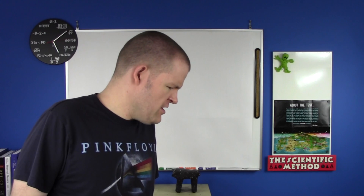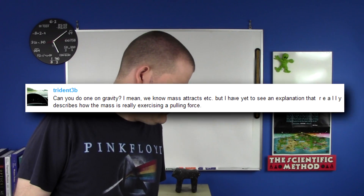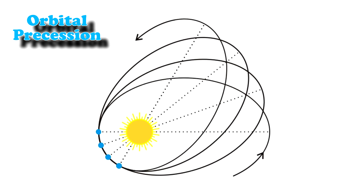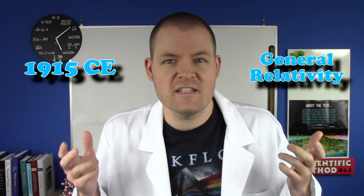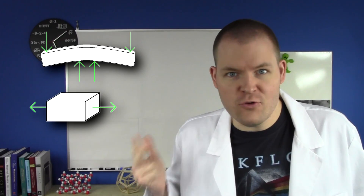That was like 350 years ago. Did you even read Trident's question? This law didn't turn out to be so universal either. There were a few things it couldn't explain, like Mercury's crazy orbit. In 1915, Einstein proposed a different model for gravity called General Relativity. It suggested that space itself was something tangible — that it could be bent, stretched, and twisted.